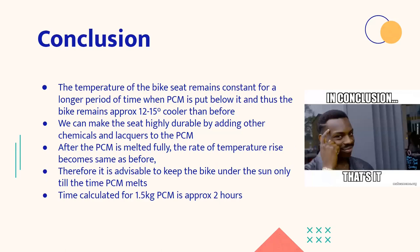So hereby we have reached our conclusion that the temperature of the bike seat remains constant for a longer period of time when PCM is put below it, and the temperature of the bike seat remains approximately 12 to 15 degrees cooler. And we can make the seat highly durable by adding other chemicals and lacquers to the PCM. And it is advisable to keep the bike under the sun only till the time PCM melts.